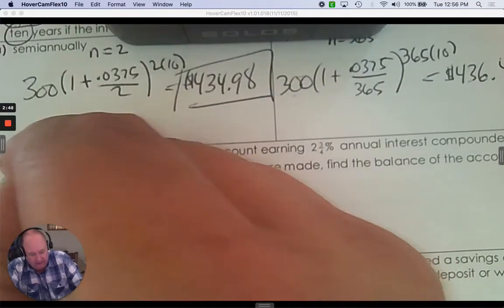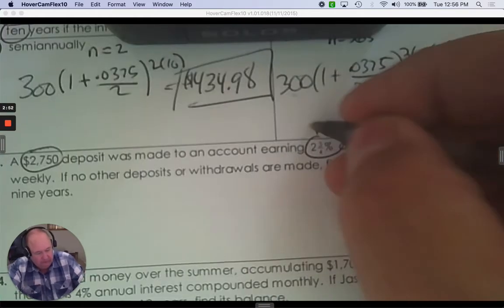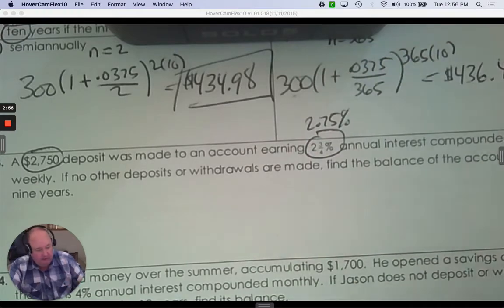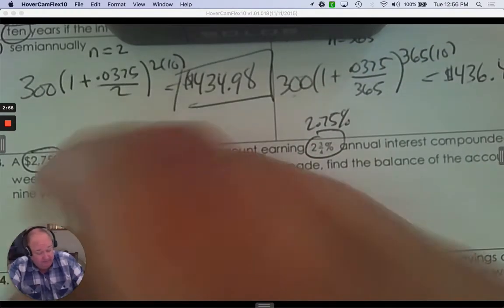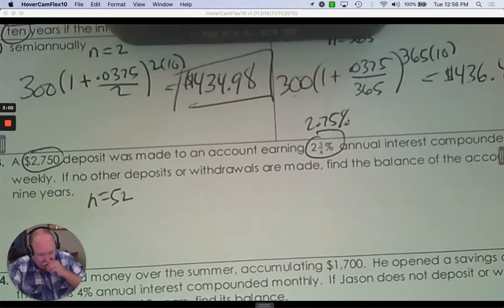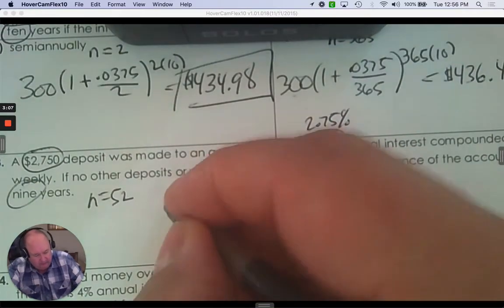$2,750 deposit was made. Earns an account of two and three quarters. That's 2.75 to make it easier. Compounded weekly. So weekly means N is 52 weeks a year. And find the balance after nine years. So let's break it down.